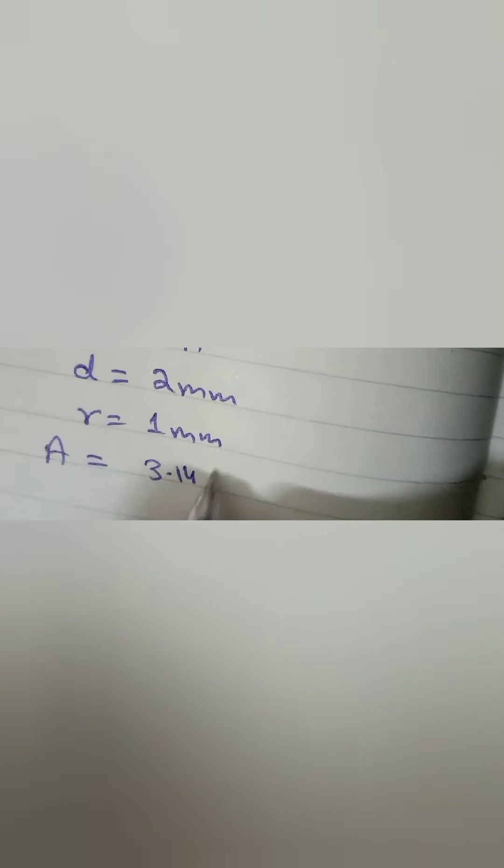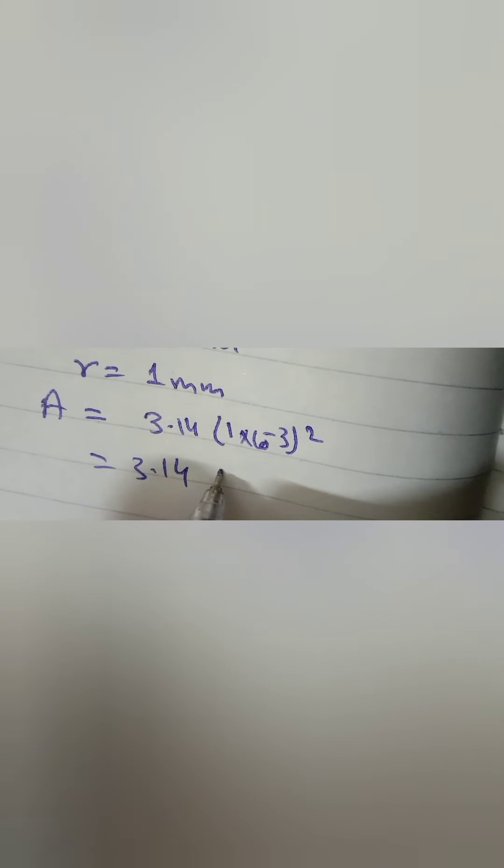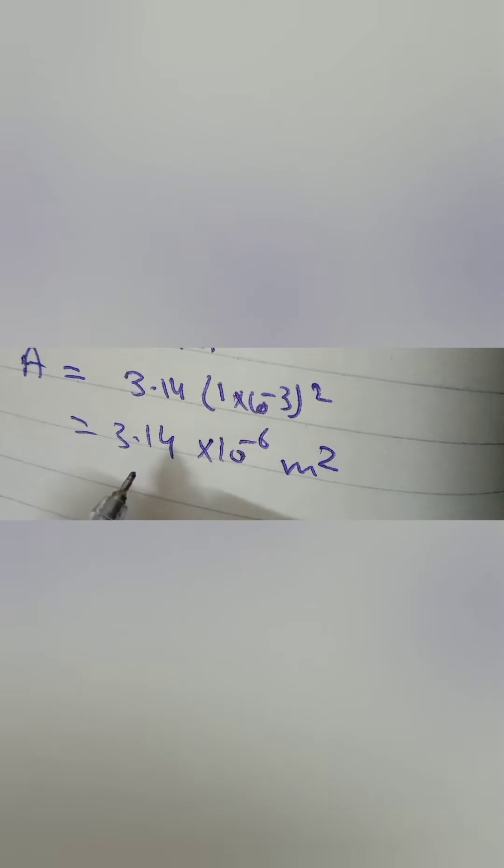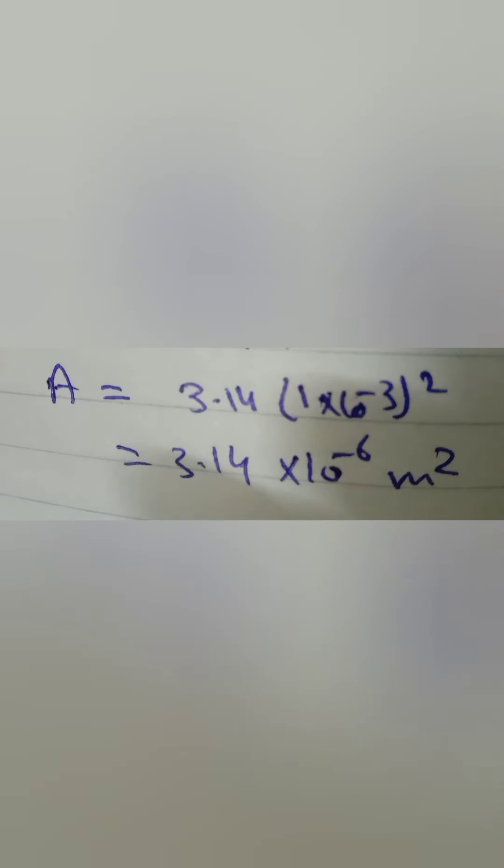And area becomes 3.14 into 10 raised to the power minus 6 because area is pi r squared. So our area comes out to be 3.14 into 10 raised to the power minus 6 meters squared.